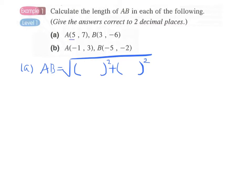Let's say point A is x1, y1. Therefore we have 5, 7. And for point B we have x2, y2: 3, -6.